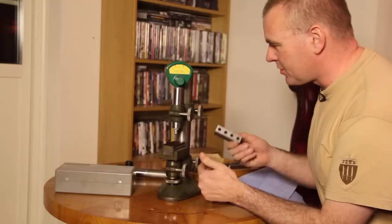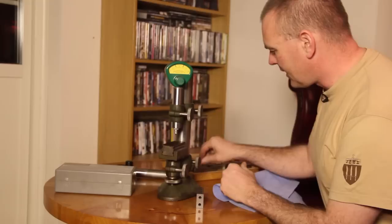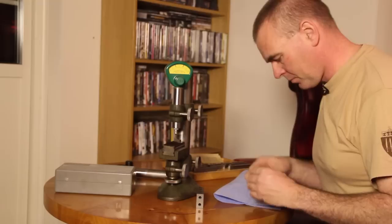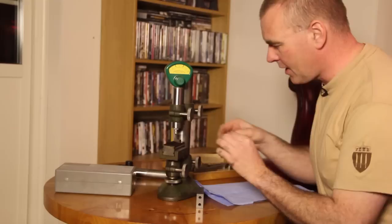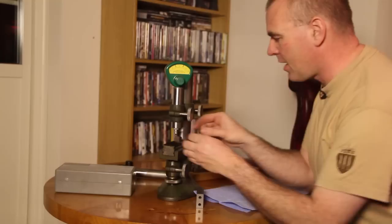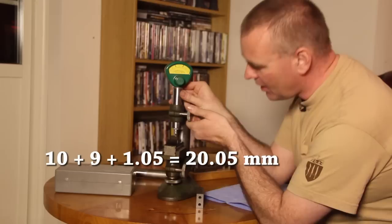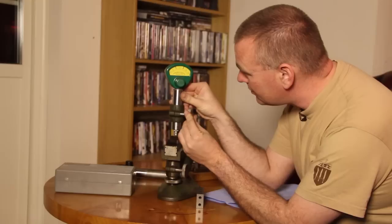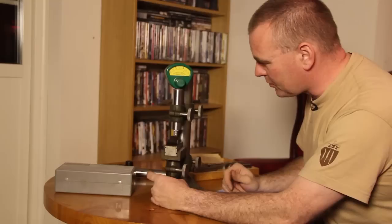So first I take a 10 millimeter gauge block, wipe off the grease and put it here. Then a 9 millimeter block, wipe off the grease, and then we have 19 millimeters. I take the 1.05 millimeter block and wipe that one clean. Now I know that we have 20.05 millimeters. Now I lower the Mikukato until it makes contact with the gauge blocks and then I crank this screw.